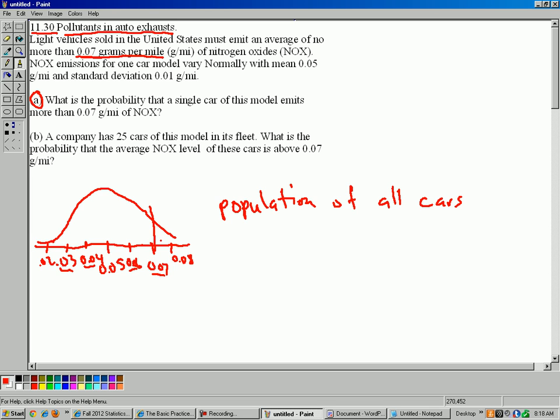So we could just solve this very quickly with the 68, 95, 99.7 rule, because 0.07 is exactly two standard deviations above the mean. So we know that 95% of the cars have between 0.03 and 0.07 grams per mile. So you can just go 100% minus 95%. That leaves 5% of cars that are either super clean down here or super dirty up there. So because the normal curve is symmetric, you can divide that 5 by 2, and then you get 2.5.